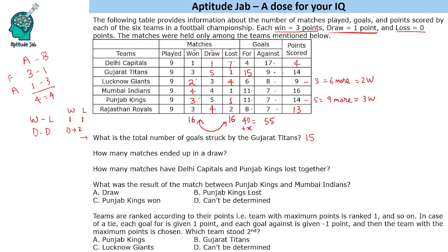Now, many might total the draw column and get 22, but that is incorrect. If there is a draw match between, say, Delhi Capitals and Gujarat Titans, you put 1 in each team's draw column — so each draw match is counted twice. Instead of 22, you divide by 2, giving 11 matches that ended in a draw.